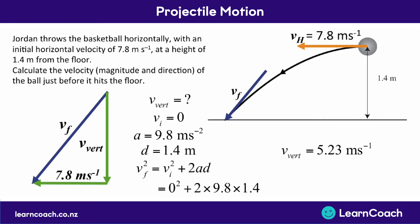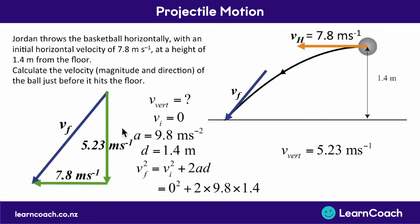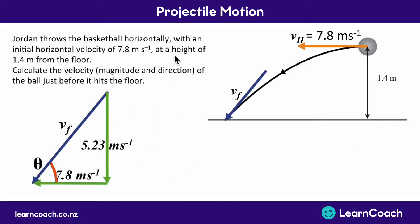Putting this into your calculator gives a large number; square root it to get vf, since we want the final velocity, not vf squared. That gives a final vertical velocity of 5.23 meters per second. So now we have a vertical velocity of 5.23 m/s and a horizontal velocity of 7.8 m/s. We need to find both the magnitude — the size of the final velocity arrow — and the direction, which means finding an angle.